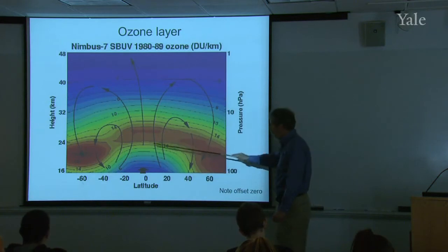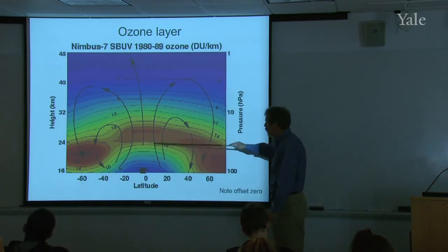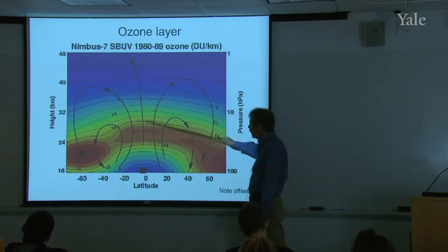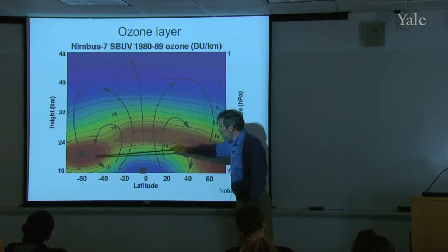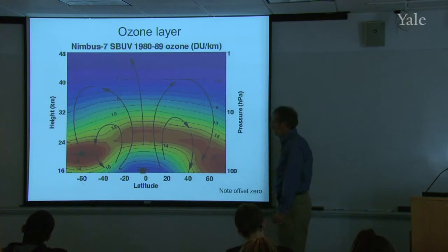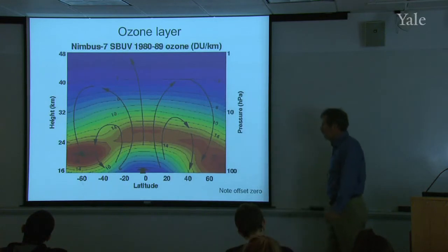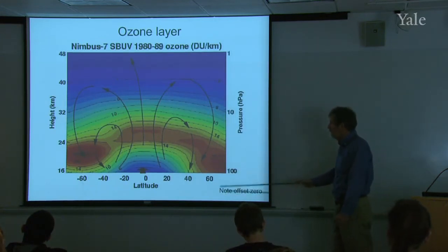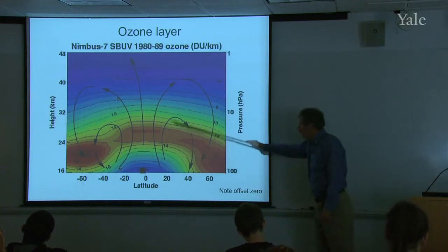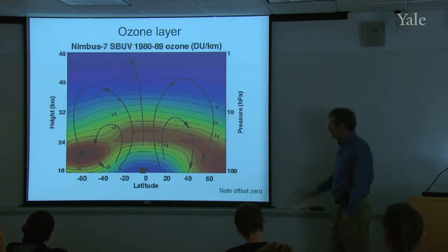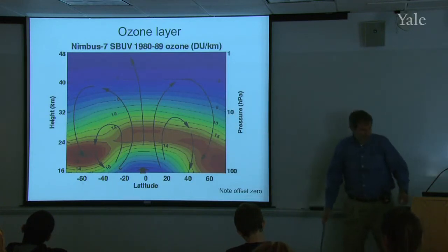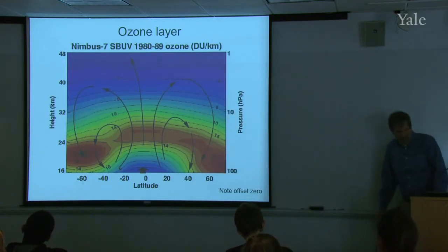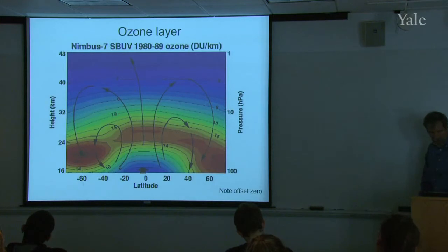Part of the reason for this difference is a broad circulation in the stratosphere called the Brewer-Dobson circulation, which I won't go into detail on. But there is this broad, slow circulation in the stratosphere that plays a role.